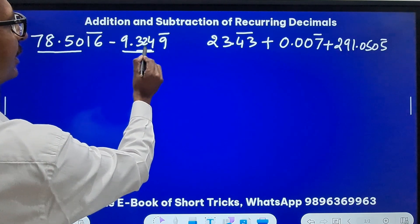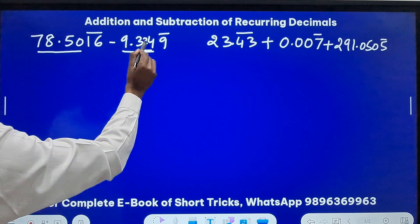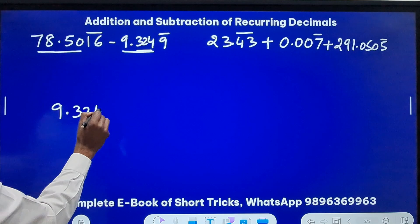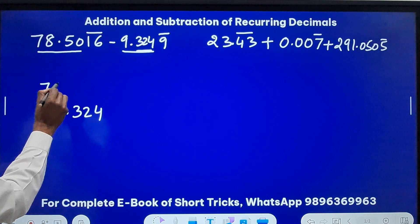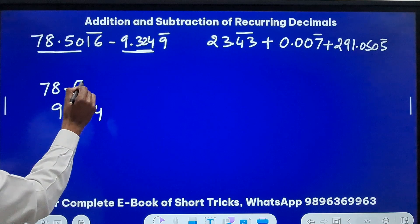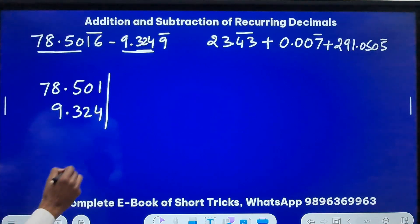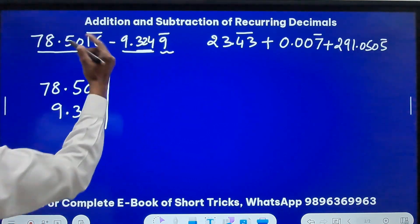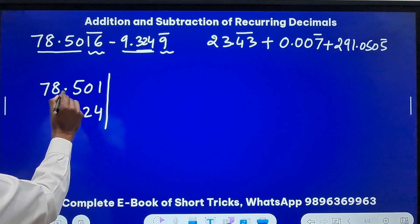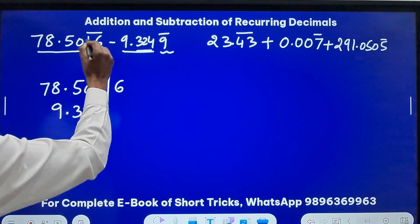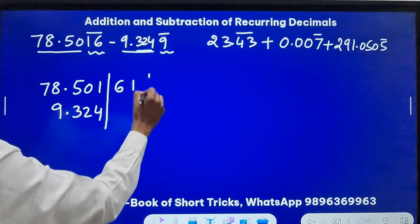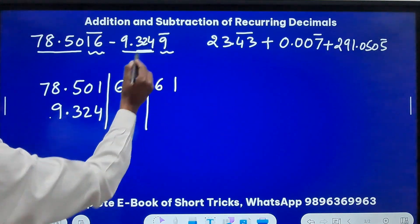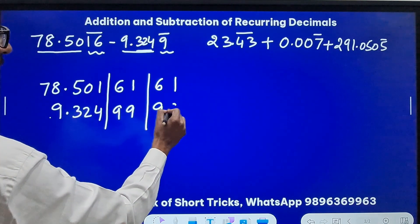See here we have a difference problem. So how many non-recurring digits? 78.50 and 9.324. So here we have greater number of digits which are non-recurring after decimal. So I will write 9.324 and here I will write 78.501, so 3 digits. In the middle I have to write how many digits? The LCM of 2 and 1 is 2, so 2 digits. So 78.5016 and then 1616, so 161. And then 9.324, 2 digits, 9999.